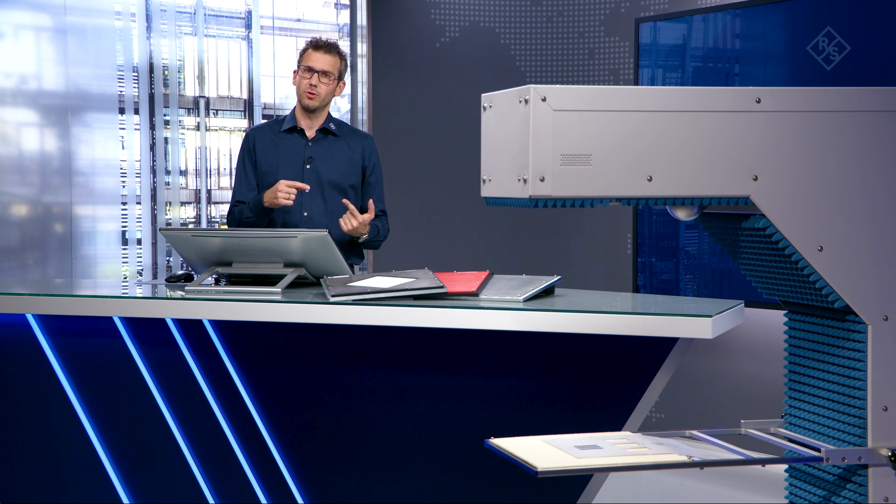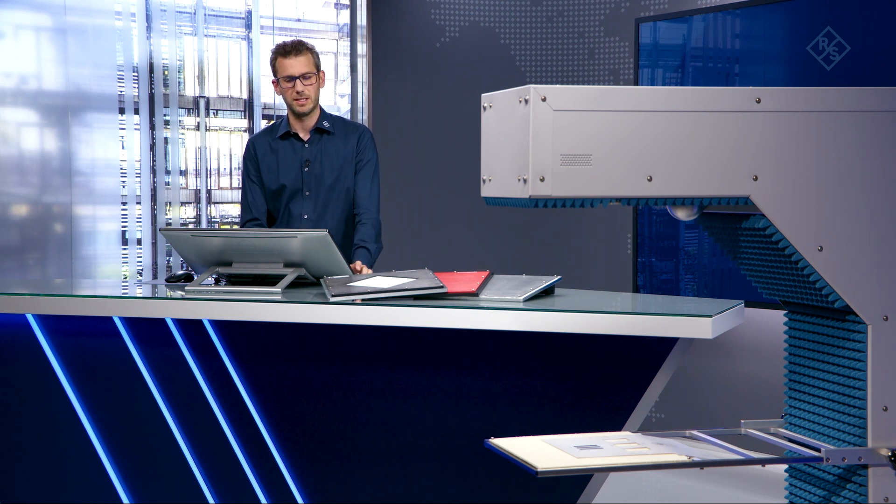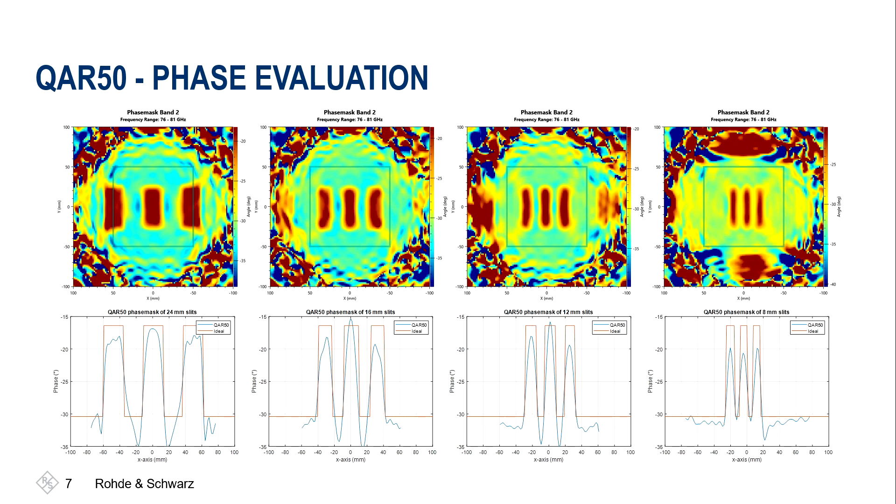How does that look with the different cutouts that we have prepared? This is depicted on that slide showing a summary of the different measurement results. Again, the phase mask image on top and the two dimensional representation of the center on the bottom. If we have bigger cutouts, for example, the slits with 24 millimeters on the left, we can see we are pretty close to the ideal behavior. And the smaller the slits get, the smaller also the phase gets that we measure with the QAR50. On the right hand side, again, the border case where we have the 8 millimeter slits, which is roughly the resolution of the instrument.